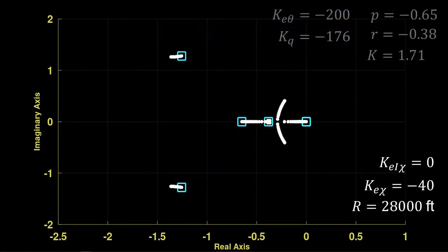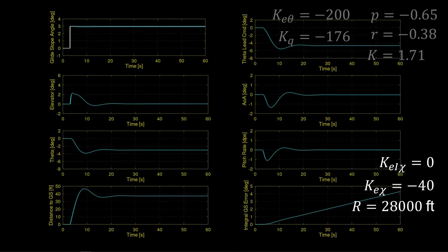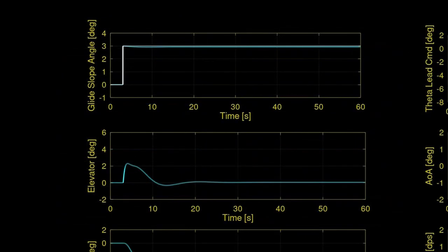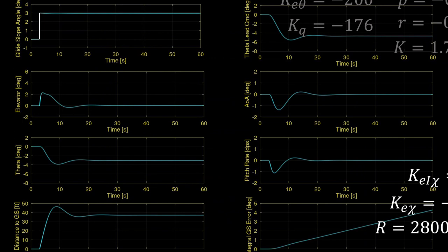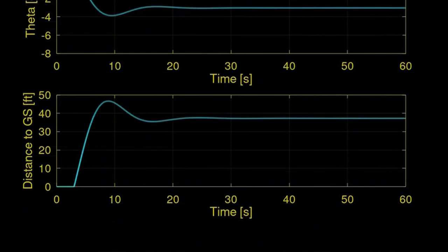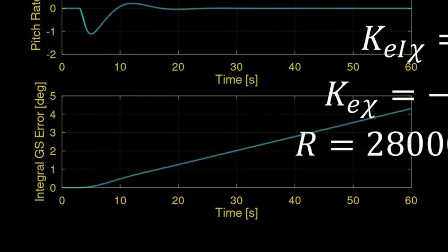A potentially good balance is at a gain of minus 40. The elevator change is small — about 2 degrees or less. The short period and pitch dynamics have about 10 seconds of transient before regulating to the new equilibrium. Distance to the glide slope comes to equilibrium around 40 feet, which causes the integral error of the glide slope to monotonically increase. This is expected since there's no integral control to respond to the increasing integral glide slope error. Let's introduce this integral loop now.